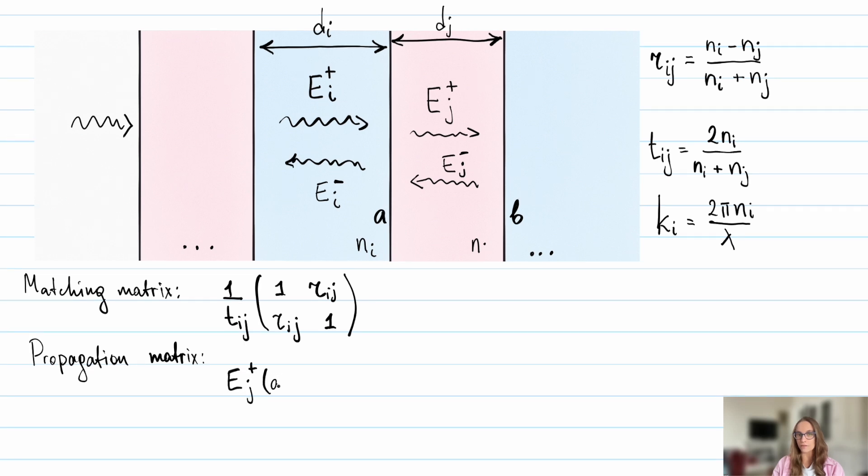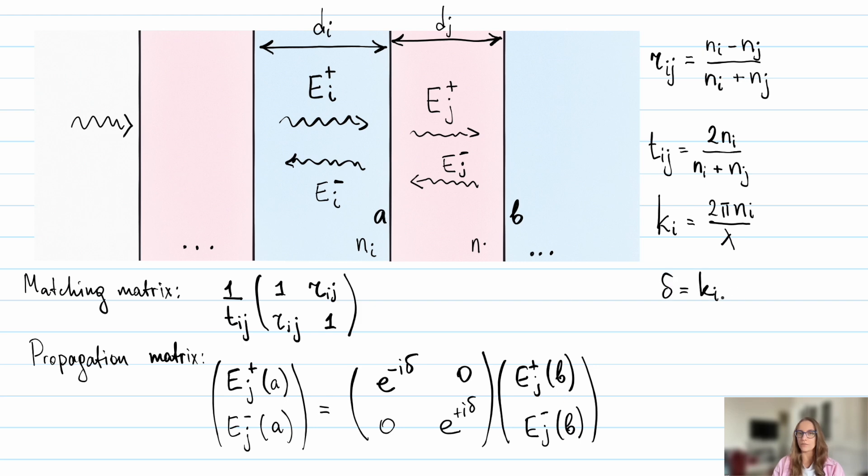But after the interface, before reaching the next one, the fields travel from point A to point B. We can describe this propagation using a simple propagation matrix. Delta is the phase delay in the layer. It equals the product of the wave vector in the layer and the layer's thickness.